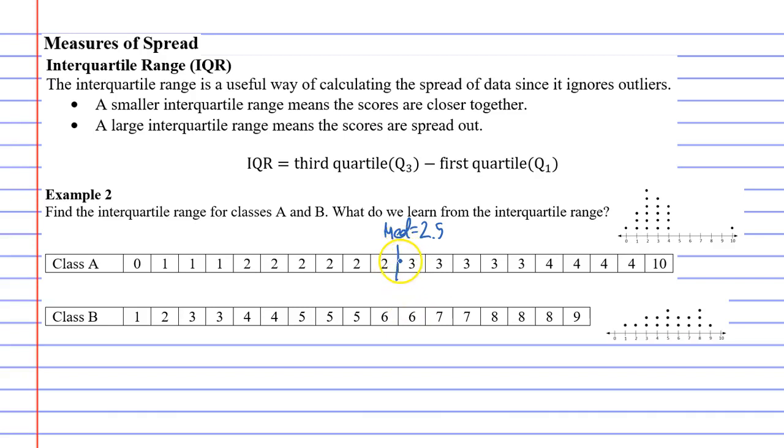Once we've found the middle mark, we then find the middle of the top half. One, two, three, four, five, which will be here. One, two, three, four, five. And this is called quartile 3, or the third quartile. So quartile 3 is 3.5, halfway between 3 and 4.